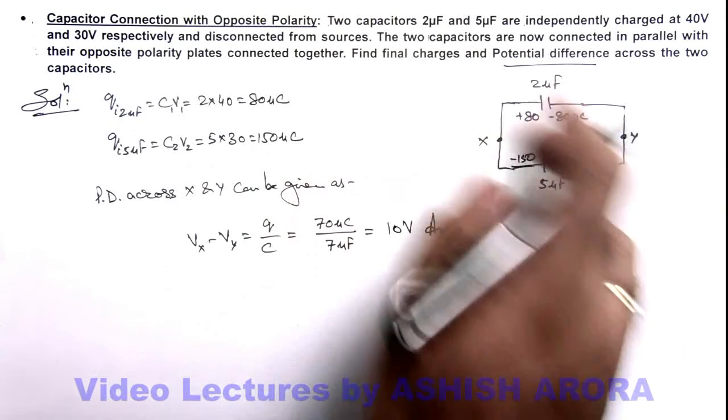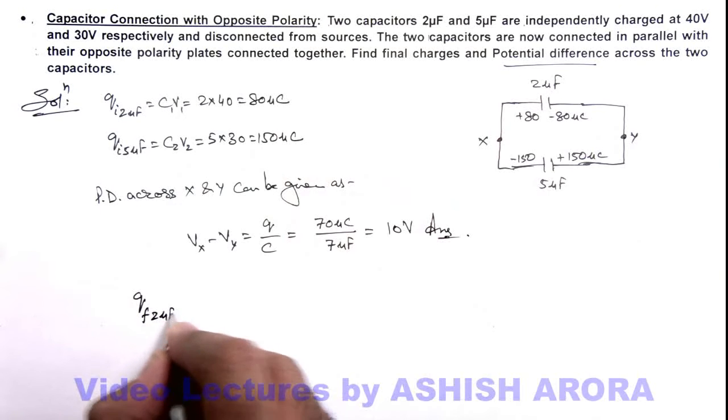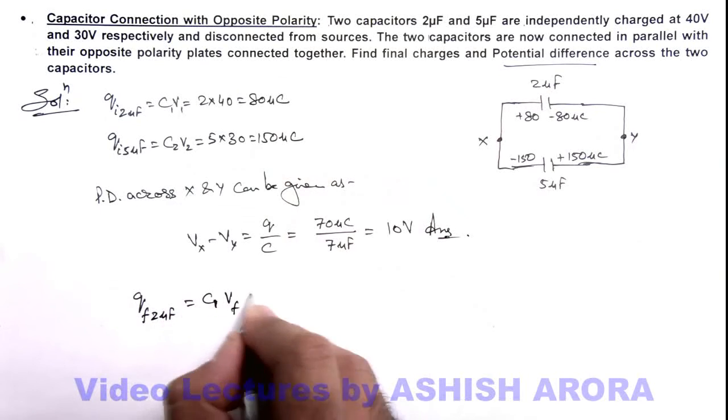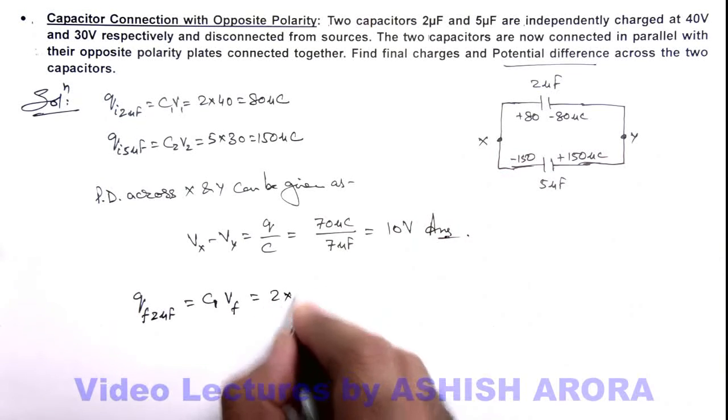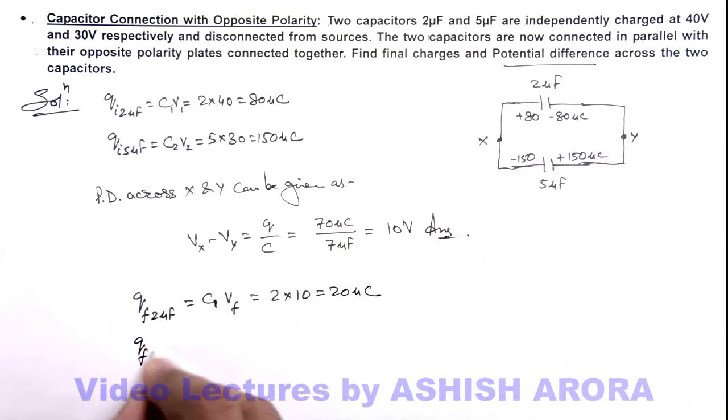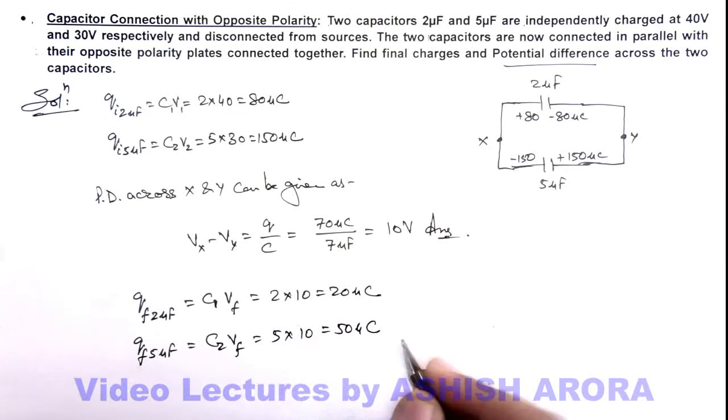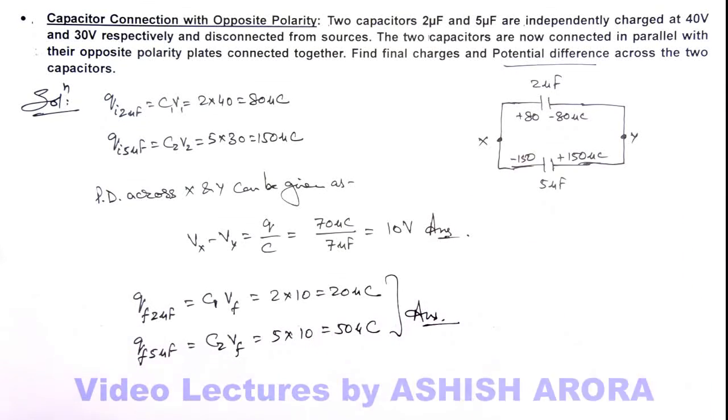Final charges can be calculated in steady state. The final charge on 2 microfarad is C1 multiplied by V final. The final potential difference is 10 volts, so this is 2 times 10, which equals 20 microcoulombs. The final charge on 5 microfarad is C2V final, which is 5 times 10, equaling 50 microcoulombs. These are the steady state charges for the two capacitors after connection.